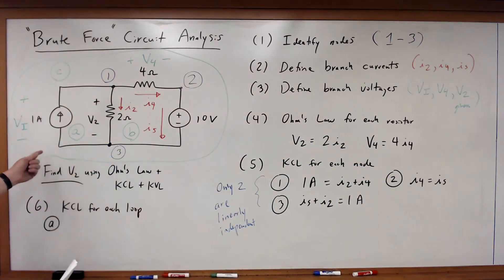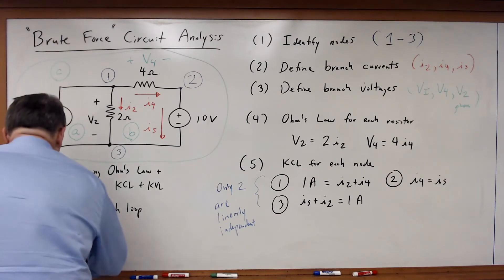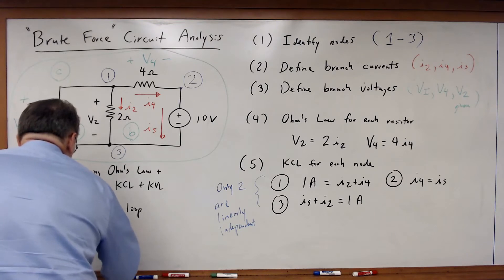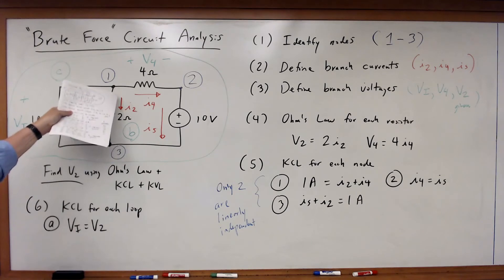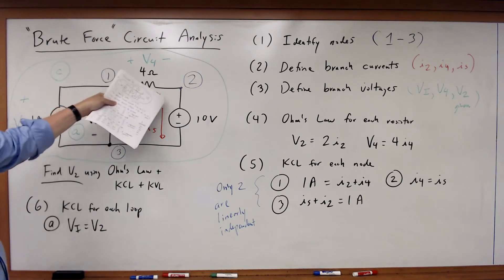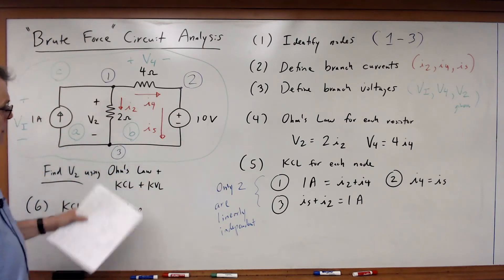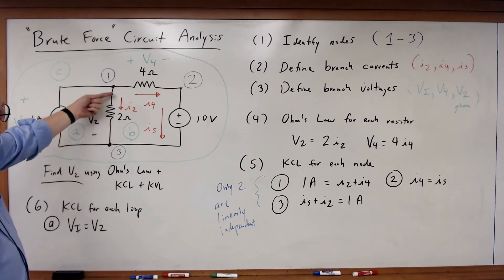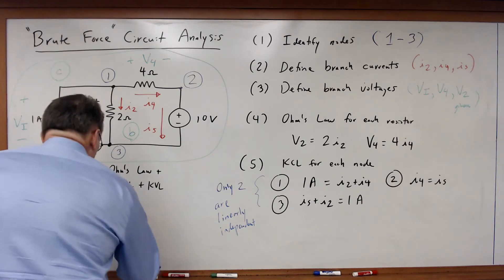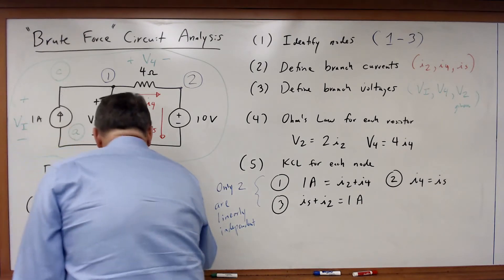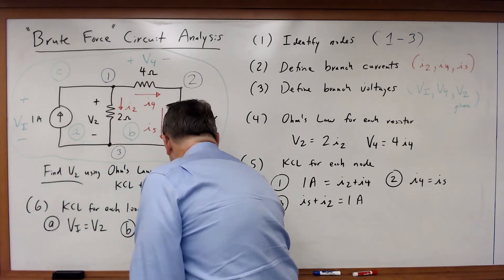For loop A, VI is the rise and V2 is the fall, so VI is equal to V2. For loop B, V2 is the rise; then as I travel around clockwise, V4 is a drop and then the 10 volts is a drop. Rise negative to positive, drop positive to negative, drop positive to negative. Therefore for loop B, V2 is equal to V4 plus 10 volts.